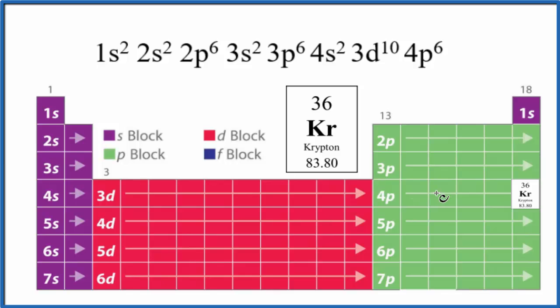We go 4p: 1, 2, 3, 4, 5, 6. 4p6. And there's krypton right there in the 4p6. So we could have already known that before we started out. We could go 1, 2, 3, 4, the fourth period.